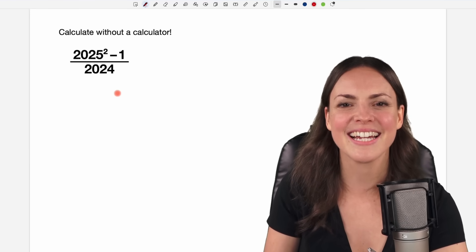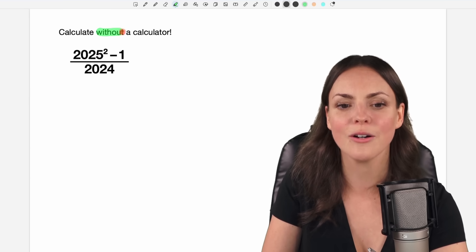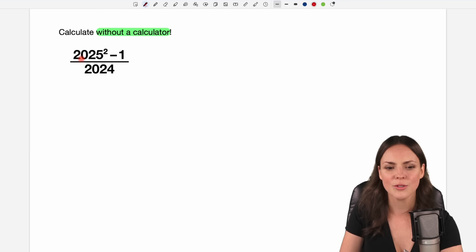Hello my lovelies, it's Susanna and today I want to show you how to calculate this expression without a calculator: 2025 squared minus 1, and all of this divided by 2024.